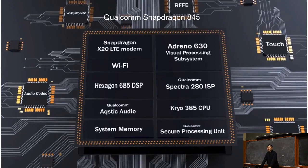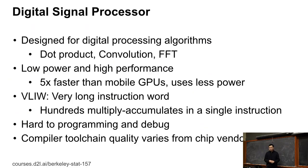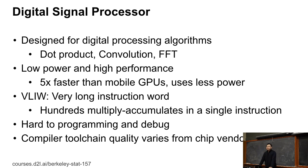It's pretty powerful and we can use it for deep learning. The DSP, called the Digital Signal Processor, is designed for digital processing algorithms. For example, we can do very efficient matrix dot products, convolutions, and FFTs. The first two are pretty related to deep learning. The design purpose of the DSP is that sometimes it's much higher performance — usually maybe five times more powerful than mobile GPUs.